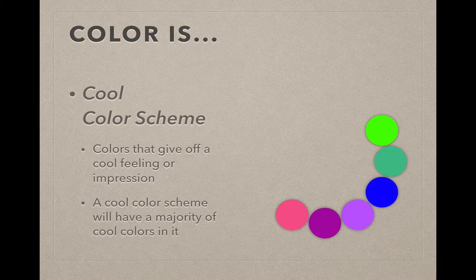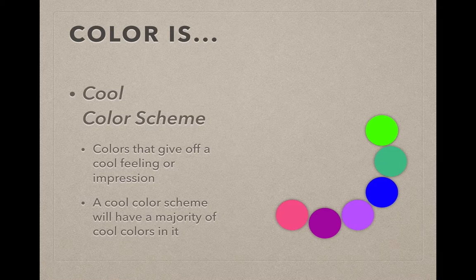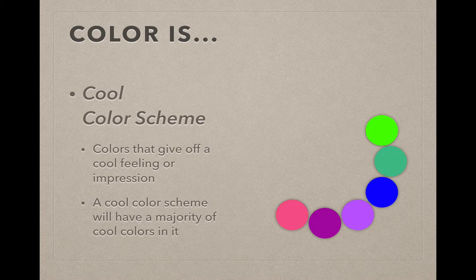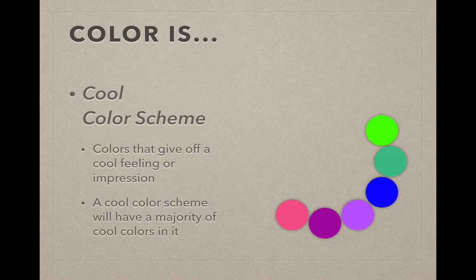One last note on warm and cool colors. If you have an object that you want to be in the foreground or appear to be in the foreground, you would use warm colors in the foreground and cool colors in the background because warm colors tend to look like they're coming towards you. Cool colors look like they're going back.